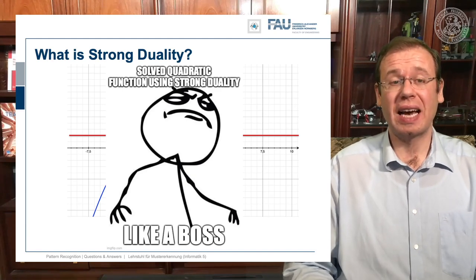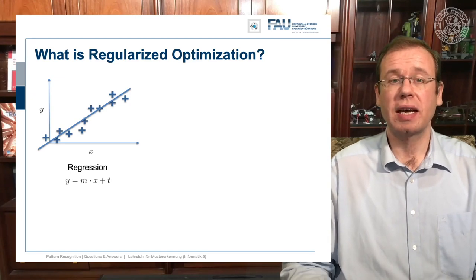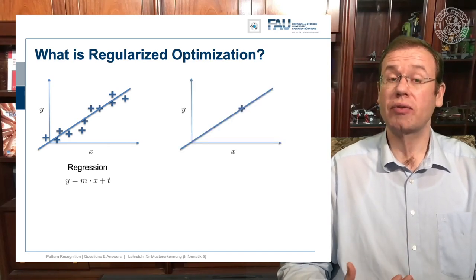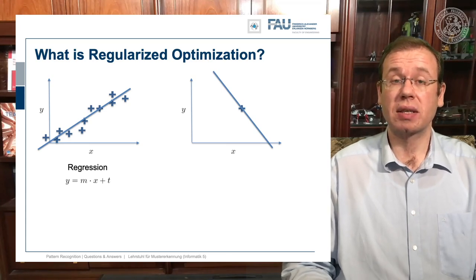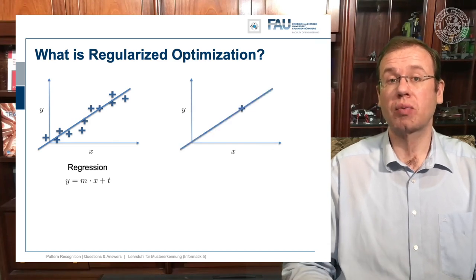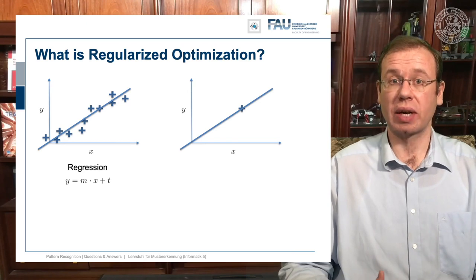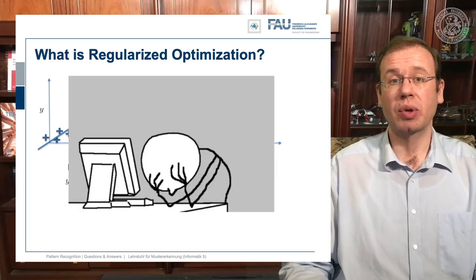Another question was: what is regularized optimization? You have a solution to a regression problem on the left-hand side, and typically you have many observations and you want to solve it. You need regularization when you have cases like just one observation and you want to fit a line — then it's not unique. Regularization can help you find the correct line. For example, you could constrain your slope to one, and then you would probably end up with the solution. So regularization can help you in these ill-posed problems, where you use prior knowledge on the slope.